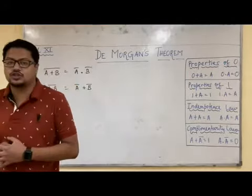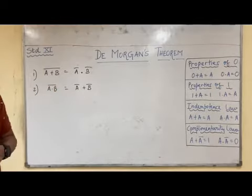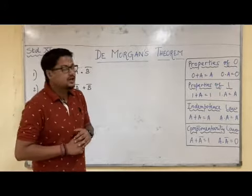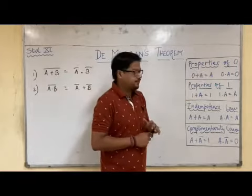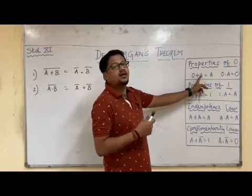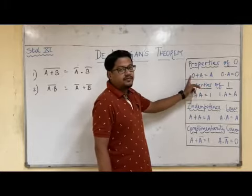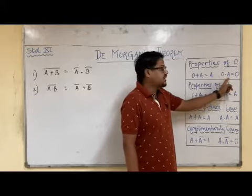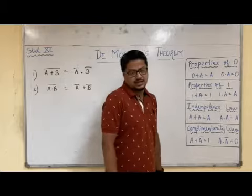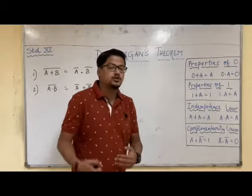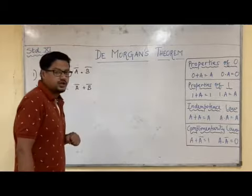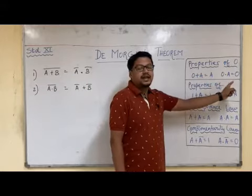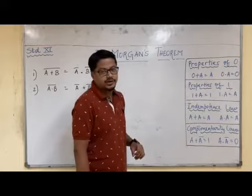Students, there are so many laws in Boolean logic but for this proof of De Morgan's theorem, whatever laws are important I have noted down here. Let us have a look at each of these rules one by one. Properties of 0: when any variable A is added with 0, the answer is A. When any variable is in AND with 0, the answer is 0.